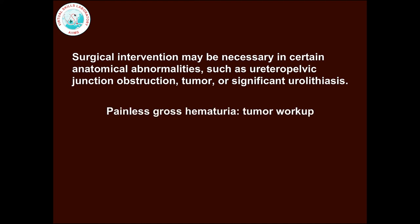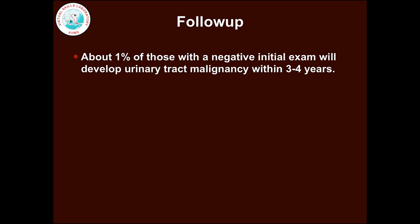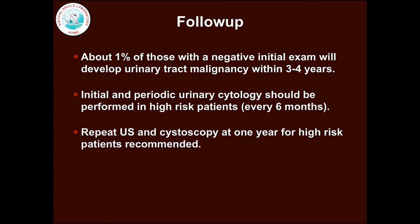For painless gross hematuria, proceed with tumor workup. For a patient presenting with hematuria, follow-up is essential. About 1% of those with a negative initial examination will develop urinary tract malignancy within 3-4 years. Initial and periodic urinary cytology should be performed in high-risk patients. Repeat ultrasonography and cystoscopy at 1 year is recommended for high-risk patients. Low-risk patients are followed with serial urinalysis.